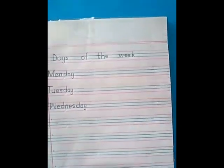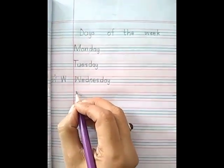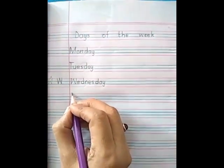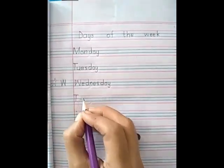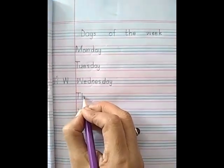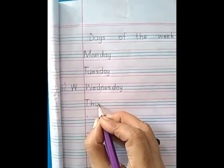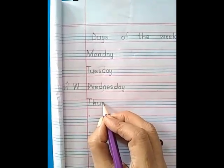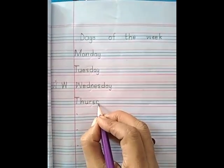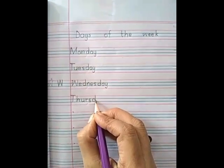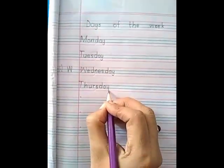Now what comes after Wednesday? Thursday. Hold your pencil on this dot and start making T, then H. T-H-U-R-S, Thursday. D-A-Y, day. Thursday.